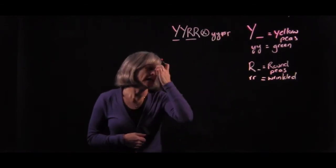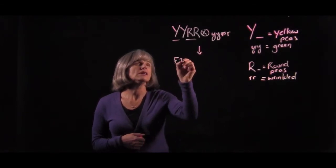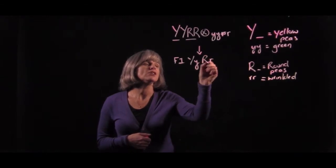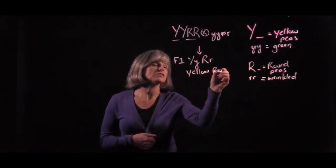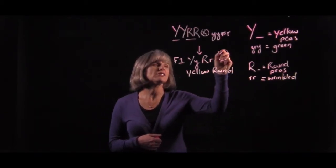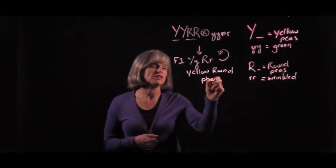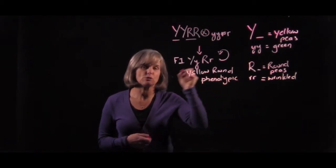All of the F1 were, as we would expect, yellow and round. And this here is the dihybrid. And what we're going to do is we're going to use a branch diagram to calculate the phenotypic ratio produced from the self of this dihybrid.